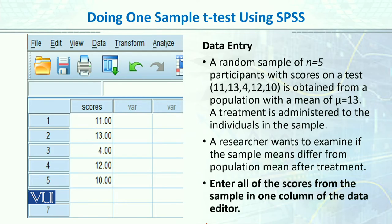Let's first take a random sample of five people with scores on a test: 11, 13, 4, 12, and 10, obtained from a population with a mean of 13. So population ka mean 13 hai, jabki jo 5 humne sample collect kiya usi population mein se unka score jo hai wo ye hai, and this score is after treatment. Our researcher wants to examine if the sample mean differs from the population mean after the treatment.